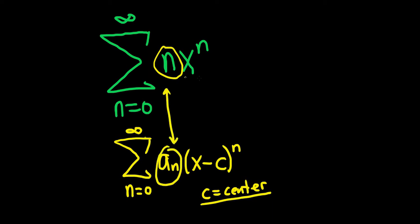And you see, you might say, what's c? Well, c is zero, because you can think of this as x minus zero to the n. So in this case, the answer is simply c equals zero.